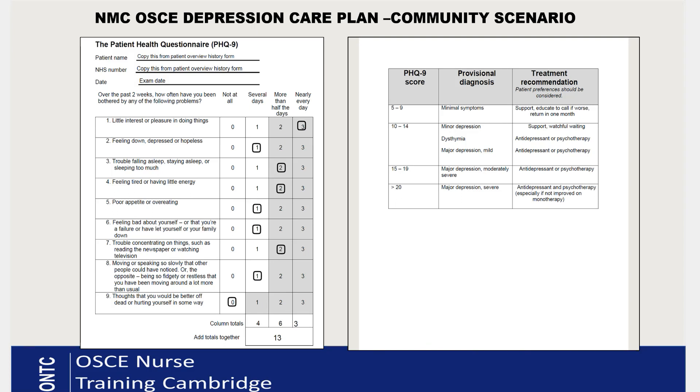If you haven't watched my video on how to complete a PHQ-9 assessment in a community scenario, go ahead and watch it. In this scenario, you've already completed the PHQ-9 form, the total score was 13, and the back of the form provides treatment recommendations for different score categories: 0–9, 10–14, and 15 and above. A score of 13 represents moderate depression.